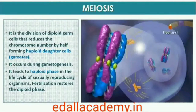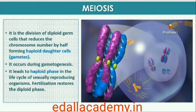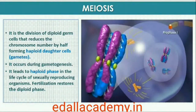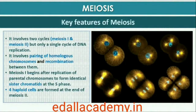The production of offspring by sexual reproduction includes the fusion of two gametes, each with a complete haploid set of chromosomes. Gametes are formed from specialized diploid cells. This specialized kind of cell division that reduces the chromosome number by half results in the production of haploid daughter cells. This kind of division is called meiosis. Meiosis ensures the production of the haploid phase in the life cycle of sexually reproducing organisms, whereas fertilization restores the diploid phase. We come across meiosis during gametogenesis in plants and animals, leading to the formation of haploid gametes.